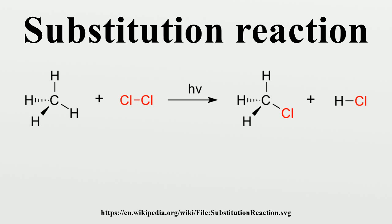A good example of a substitution reaction is halogenation. When chlorine gas is radiated, some molecules split into two chlorine radicals whose free electrons are strongly nucleophilic. One radical breaks a weak C-H covalent bond and grabs the liberated proton to form the electrically neutral HCl. The other radical reforms a covalent bond with CH3 to form CH3Cl.